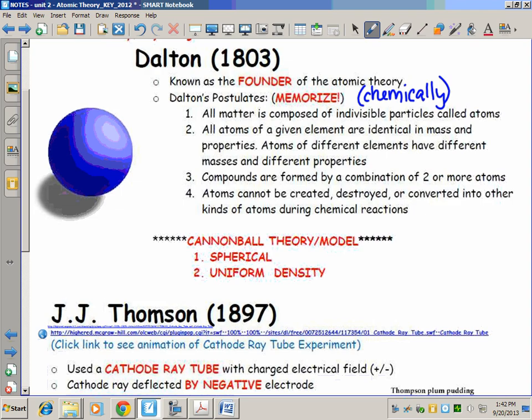All atoms of a given element are identical. Atoms of different elements are different. That sums up number two. All carbons are identical, but all carbons are unique when compared to say oxygen or fluorine or nitrogen.